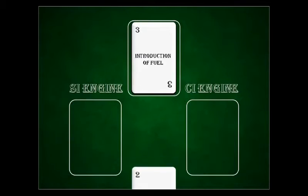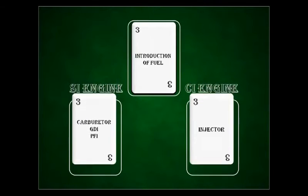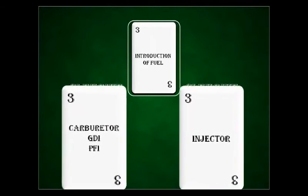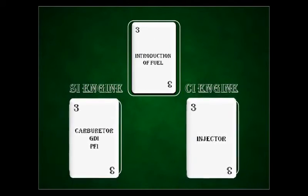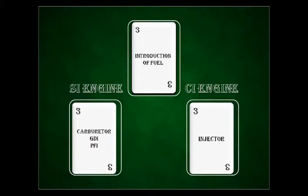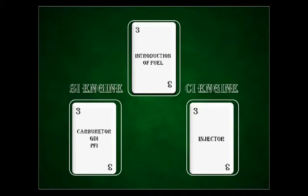Next is introduction of fuel into the engine. In SI engines, during the piston suction stroke, a mixture of air and fuel is injected from the cylinder head portion of the cylinder. The air-fuel mixture is injected via the carburetor, which controls the quality and quantity of the injected mixture. In CI engines, fuel is injected into the combustion chamber towards the end of the compression stroke via a fuel injector, and it starts burning instantly due to the high pressure.